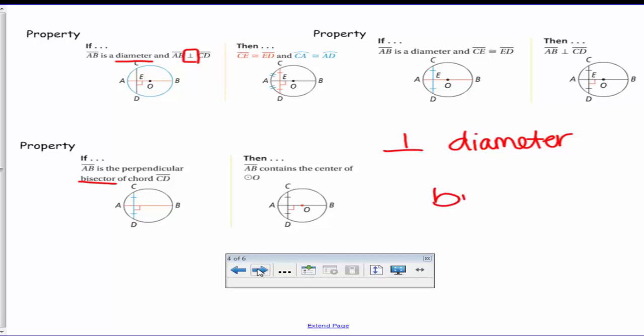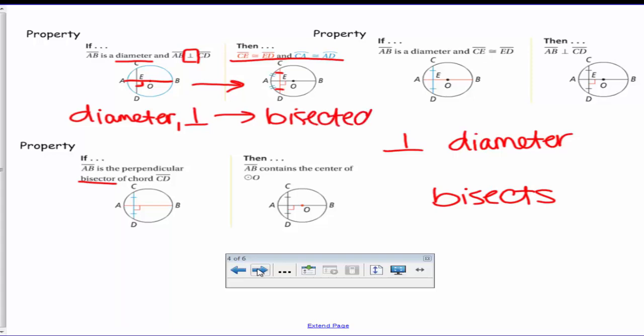So those are three key words that are within all of these properties. There are if-then statements with the properties. First off, if it says you have the diameter and you have perpendicular, then you can assume the following: that CE is congruent to ED. So you have diameter, perpendicular, then you know that it's bisected because that diameter is cutting this chord in half. Also, the arcs are going to be congruent.